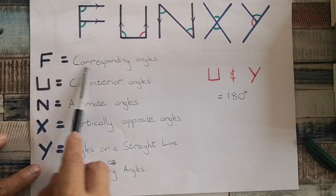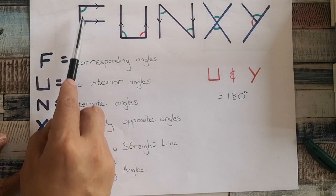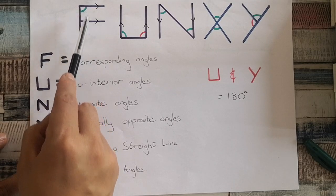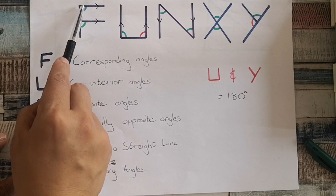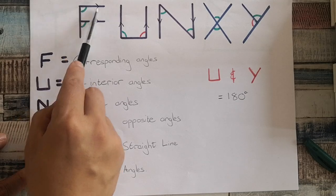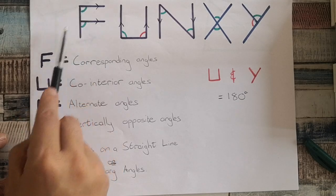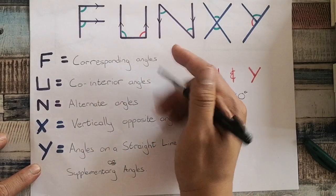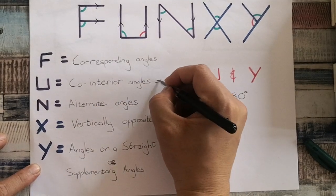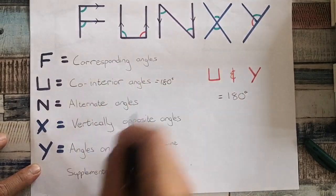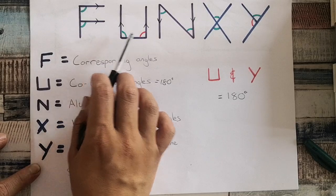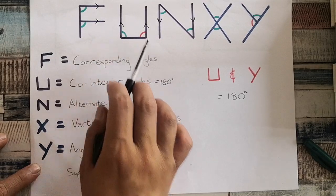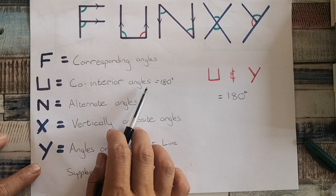My F is corresponding angles, which means this angle over here is equal to this angle over here, as long as these lines are parallel. U stands for co-interior angles — co-interior angles equal to 180 degrees. So that means that angle plus this angle over here is equal to 180 degrees.